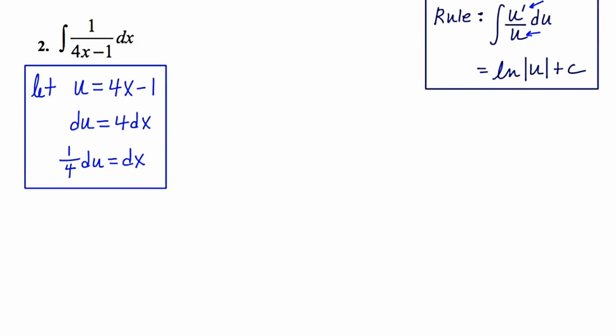And now I'm going to rewrite our problem exclusively in terms of u. So instead of 1 over 4x minus 1, I'm going to have 1 over u. And instead of dx, I'm going to replace that with 1 fourth du. And since 1 fourth is a constant, I'll put it on the outside.